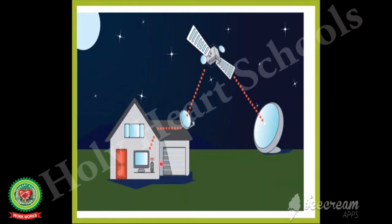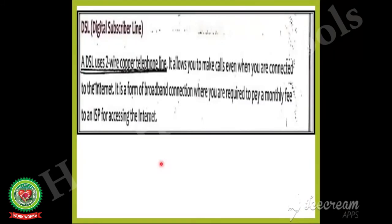The next type of internet connection is DSL. The full form of DSL is Digital Subscriber Line. A DSL uses a two-wire copper telephone line. It allows you to make calls even when you are connected to the internet. It is a form of broadband connection where you are required to pay a monthly fee to an ISP for using the internet.